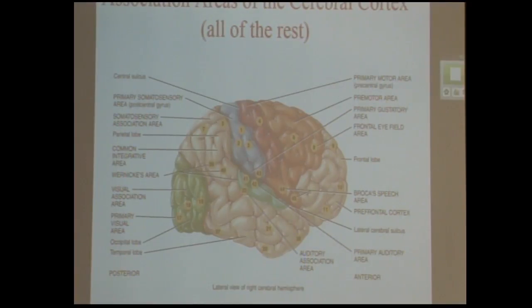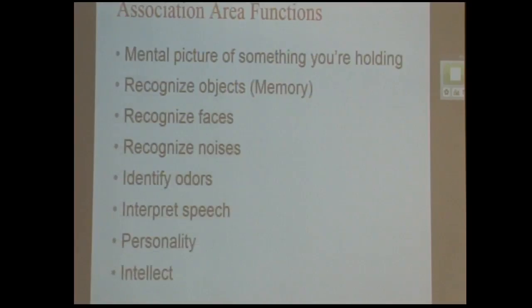And the last one which is actually most of the cerebrum is your association areas. And what association areas are is things like if you close your eyes and hold something, you have a mental picture of what it is. Because you know, like for example, I know what a marker looks like. I don't have to look at it to see what it looks like. Recognize objects, recognize faces, noises, know what odors are. So basically a lot of your memory is there.